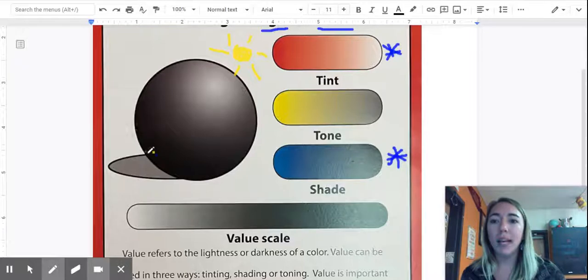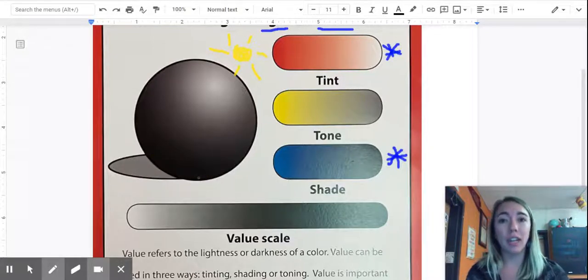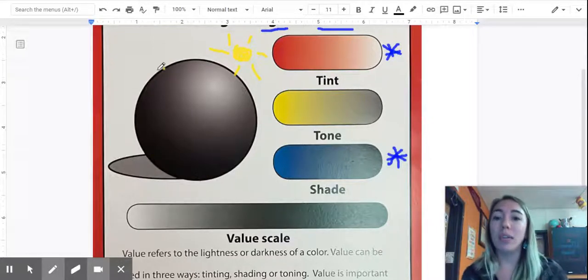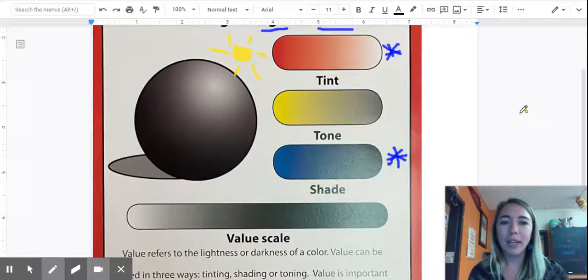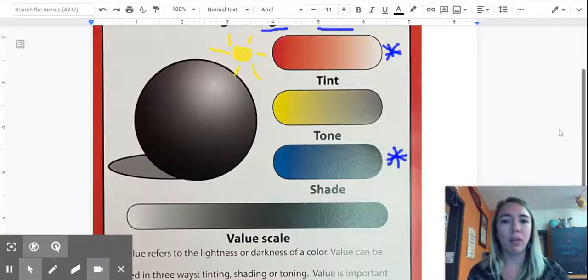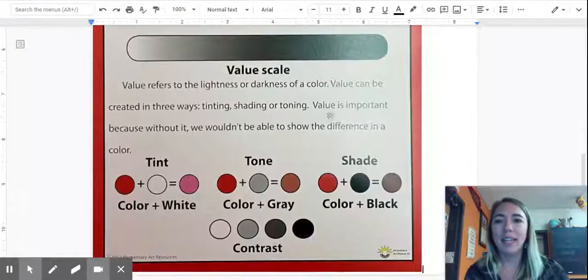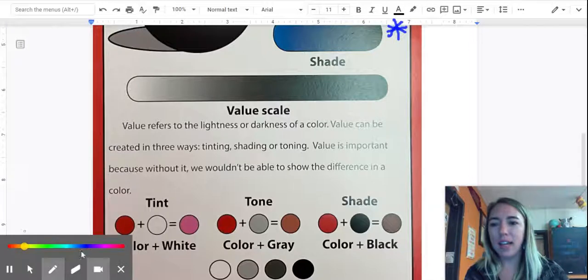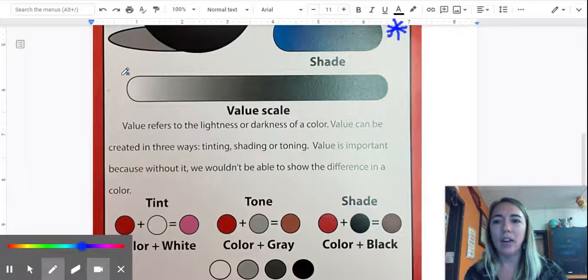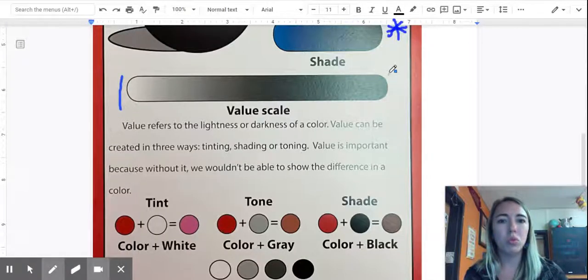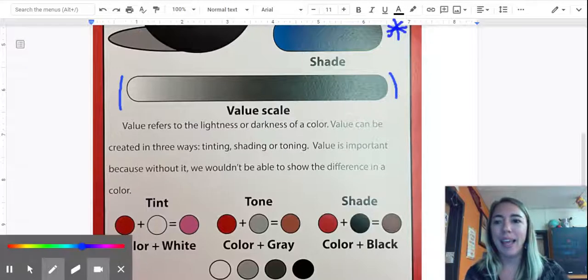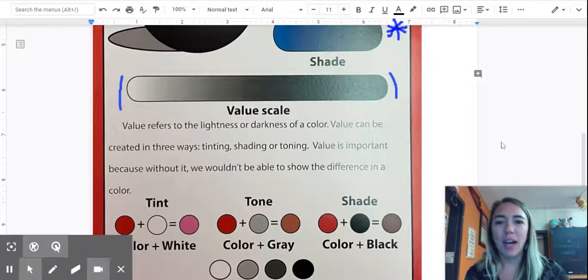So when we add these values, it creates the illusion that it is a 3D shape. But really it's just a 2D shape that we drew. But we added value to it. Down here is a value scale. So again, it shows the range from lightness to darkness. And let's move down a little bit more.